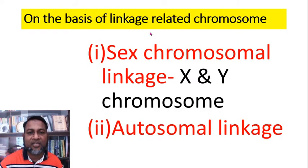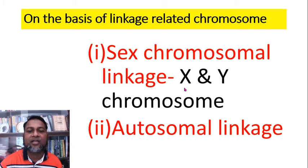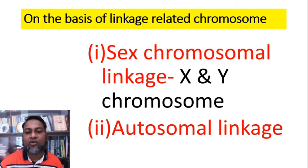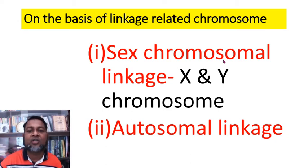On the basis of linkage-related chromosomes, linkage is of two types. One is sex chromosomal linkage, where linked genes are located in the X or Y chromosome — genes of X chromosomes are linked, and genes of Y chromosomes are linked. On the other hand, when linked genes are located in autosomes, it is known as autosomal linkage. Autosomes are not responsible for sex determination, but sex chromosomes are responsible for sex determination.